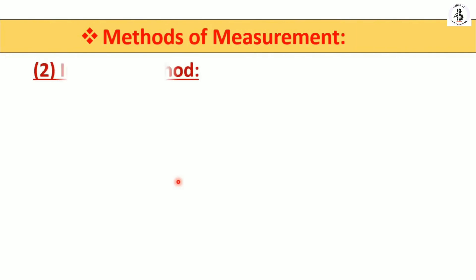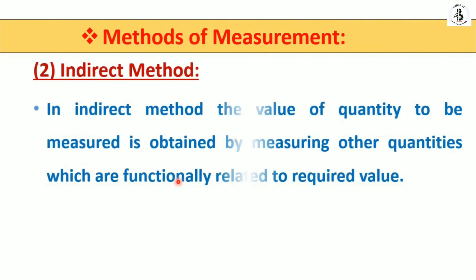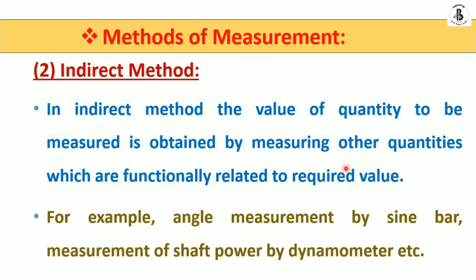The second method is the indirect method of measurement. In the indirect method, the value of the quantity to be measured is obtained by measuring other quantities which are functionally related to the required value. The instrument does not directly give the reading; it uses some relation or change with respect to a standard. For example, for measurement of angles you use a sine bar, which does not directly give the angle reading. With the application of the sine bar, dial indicators, and slip gauges, you take alignment readings and indirectly measure the angle.